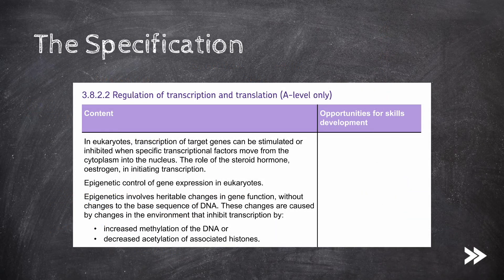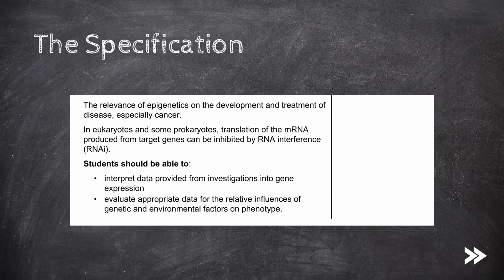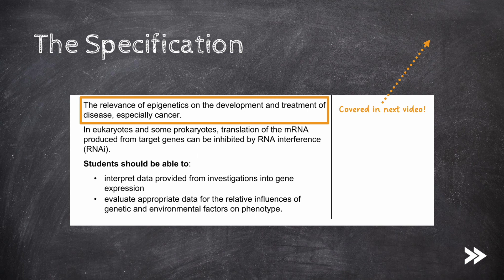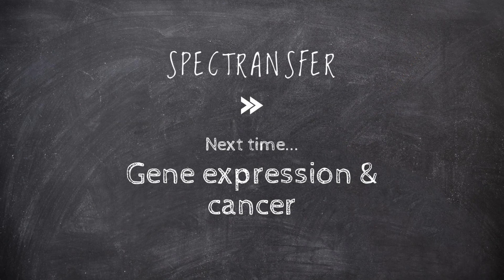That would be this part of the specification covered. We have covered how, in eukaryotes, transcription of target genes can either be stimulated or inhibited when specific transcriptional factors move from the cytoplasm into the nucleus. We have also covered the role of oestrogen in initiating transcription. We have defined epigenetics and covered the epigenetic control of gene expression, including how transcription can be inhibited by increased methylation of DNA and decreased acetylation of associated histones. I will cover the relevance of epigenetics on the development and treatment of disease with a focus on cancer in my next video. And finally, we have covered how, in eukaryotes and some prokaryotes, translation of mRNA can be inhibited by RNA interference. That would be it for now guys, thanks for watching, please subscribe and comment — next time we will be covering gene expression and cancer.